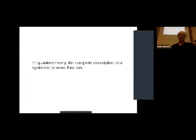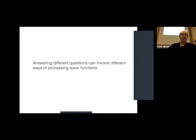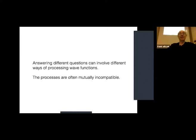In physics, in quantum theory, the complete description of a system is its wave function. But we can't observe wave functions directly. This leads to a very interesting situation — the physical version of complementarity, which is a theorem in quantum mechanics. The wave function is the primary reality, but we don't have access to it directly. We can only ask questions of physical systems, and answering different kinds of questions can involve different ways of processing the wave function. The processing involved to answer different kinds of questions is often mutually incompatible.